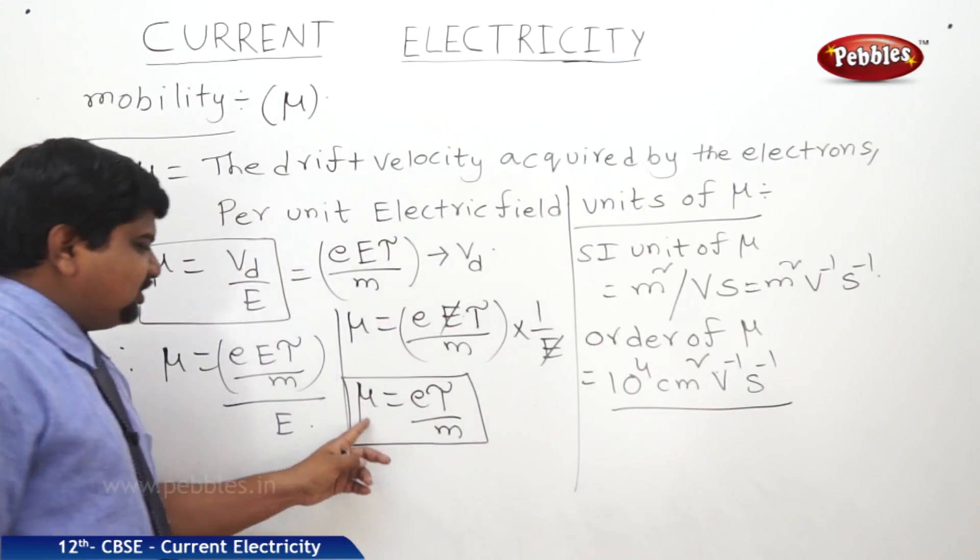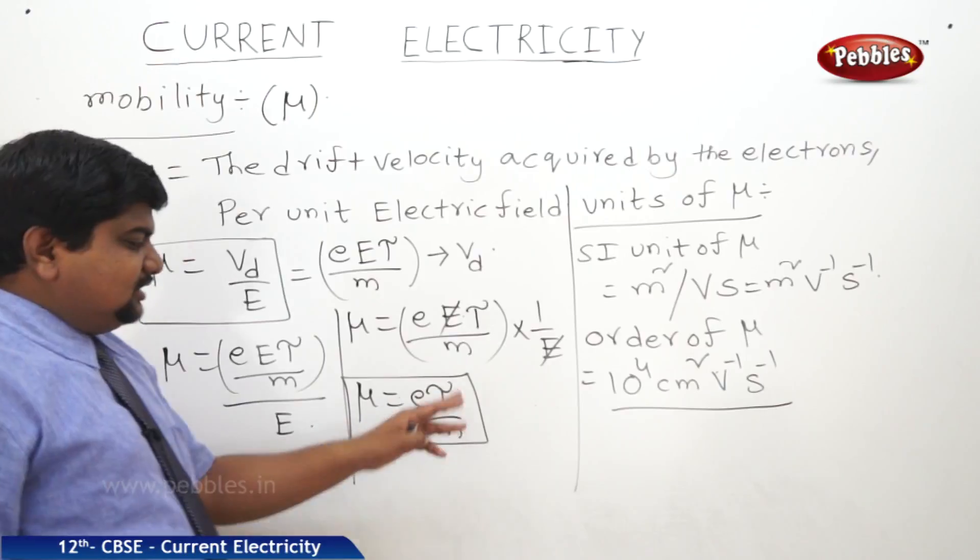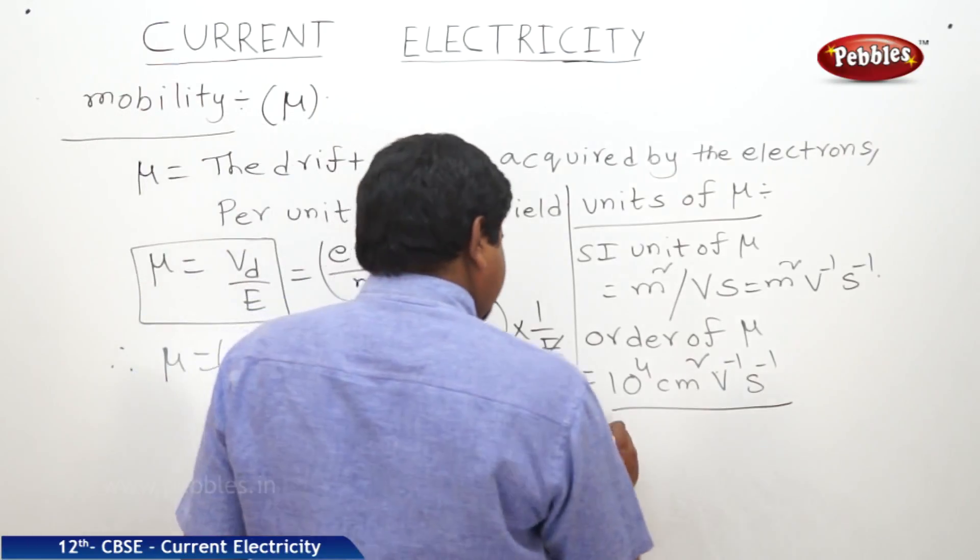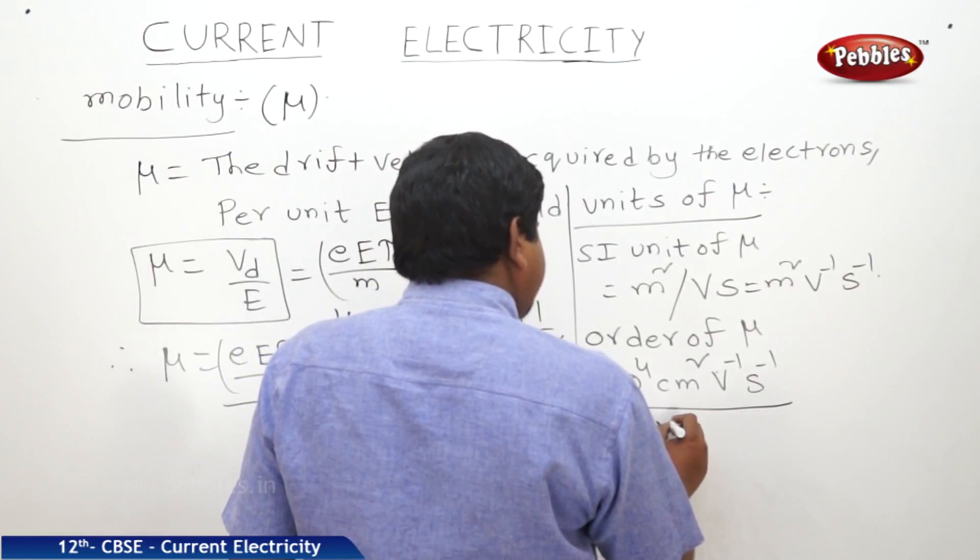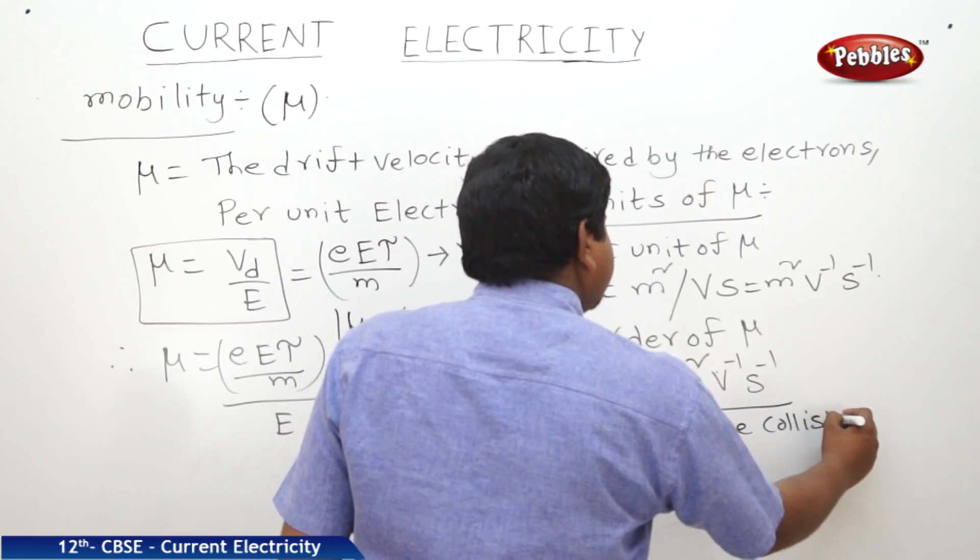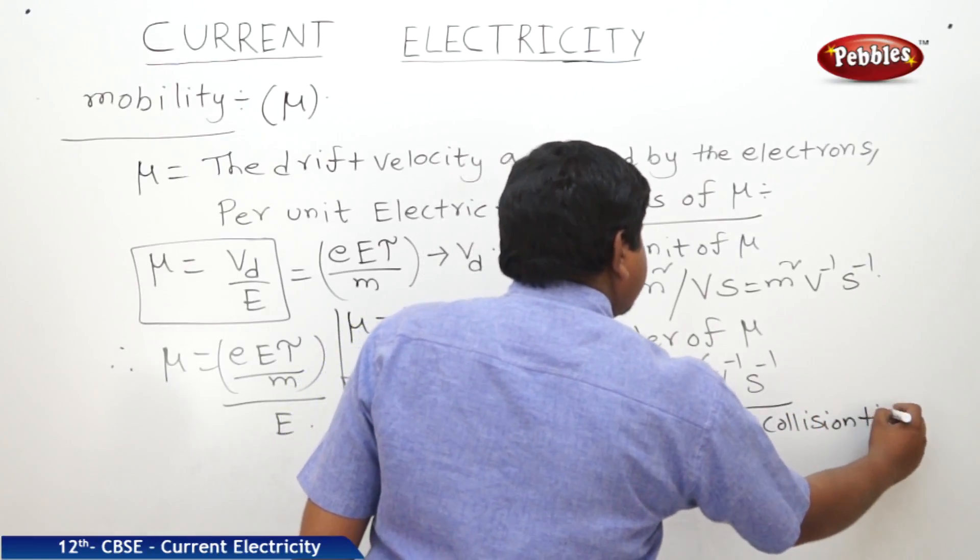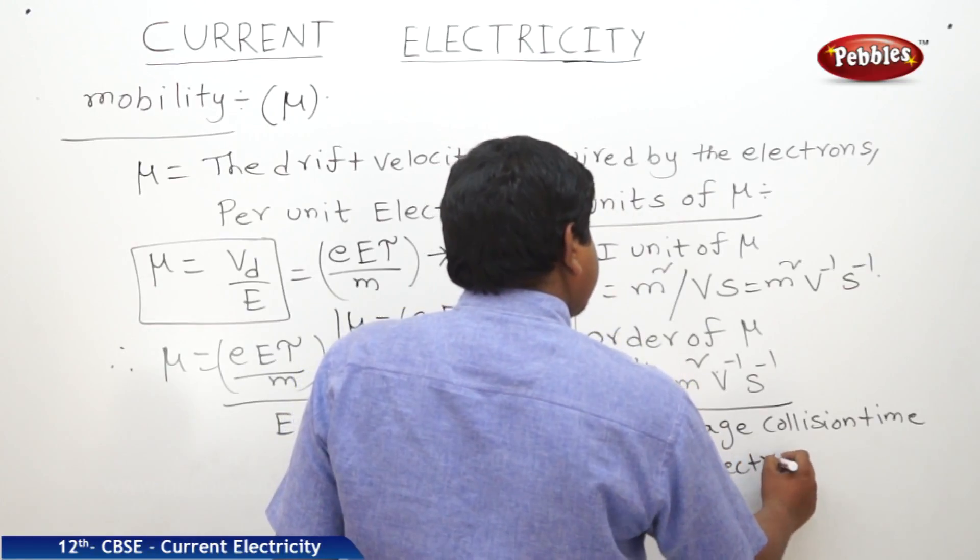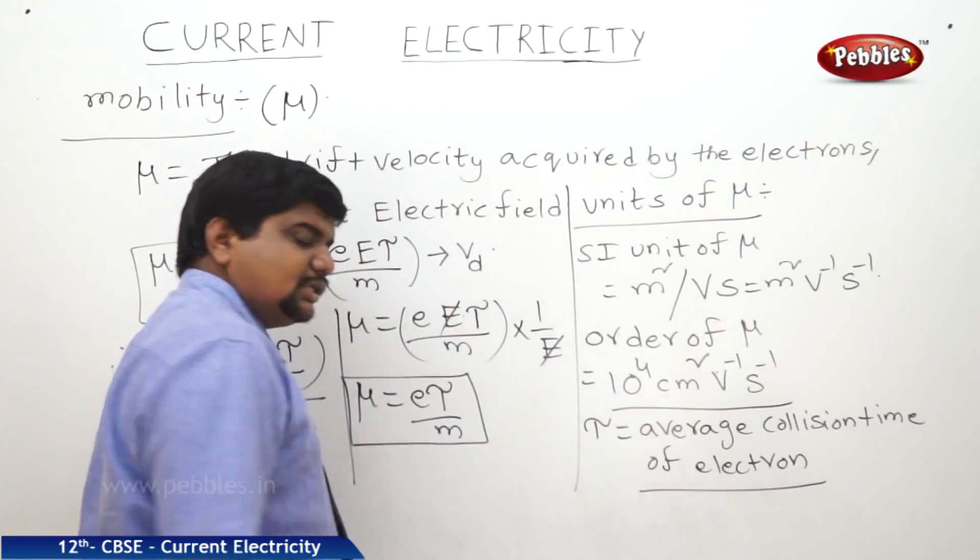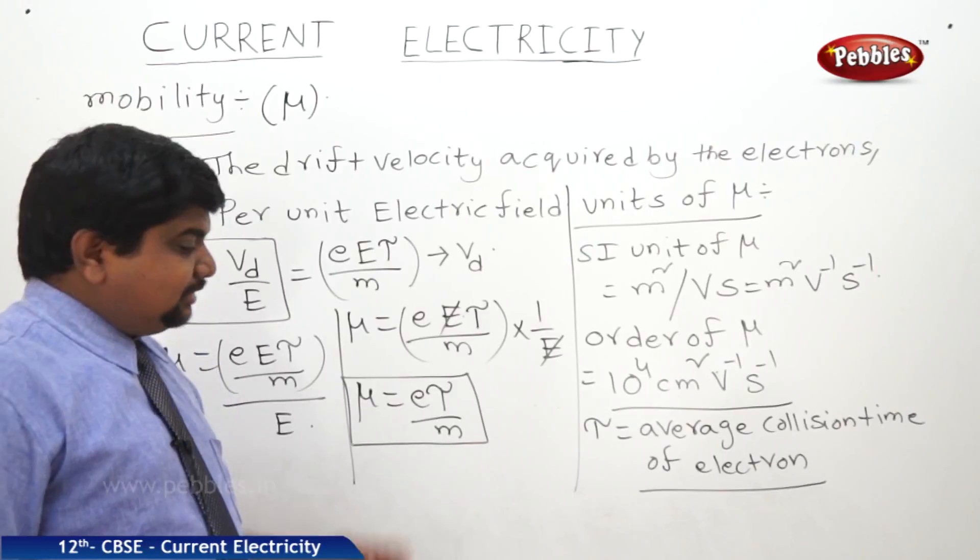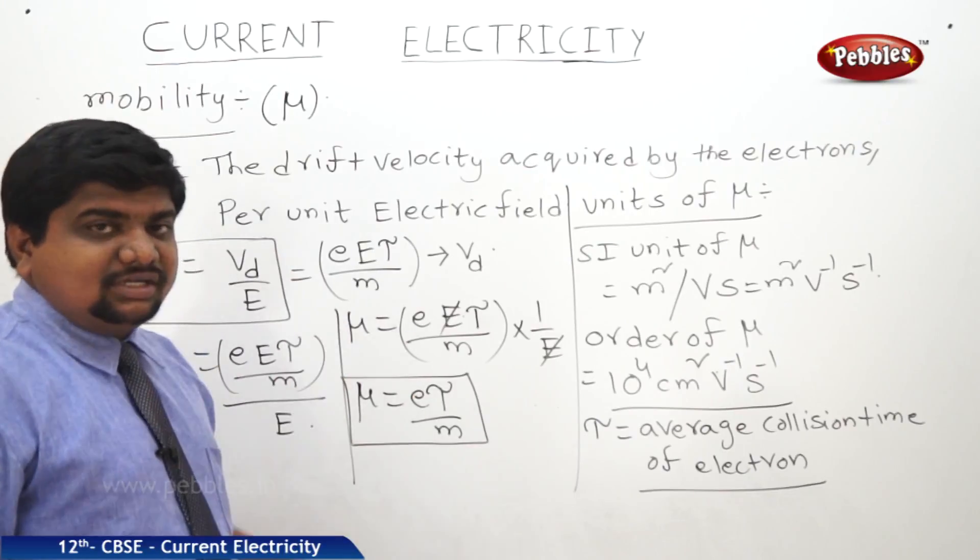What is the tau in the expression mu is equal to tau? This tau is the average time taken for one collision of an electron. Average collision time of electron. This is tau. This tau has come in many equations. In sigma, it has come. In rho, it has come. In mu, it has come. In J also, it has come.